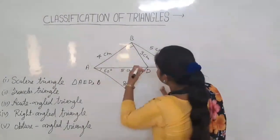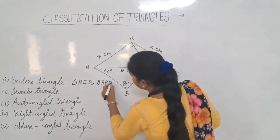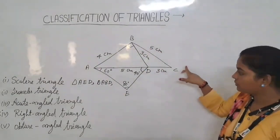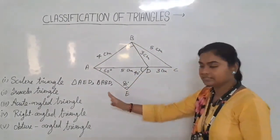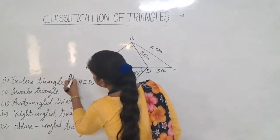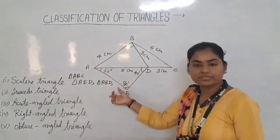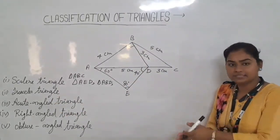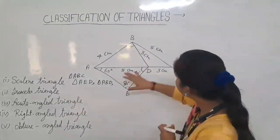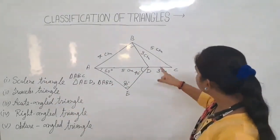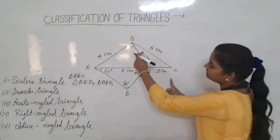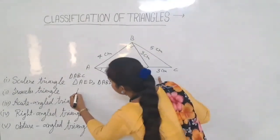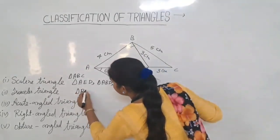Triangle A, B, D has sides 4 cm, 8 cm, and 5 cm — all different — so triangle ABD is a scalene triangle. Triangle ABC also has all different sides, so it is also a scalene triangle. Second, we have isosceles triangle — two sides are equal and two angles are equal. Triangle BDC has sides 3 cm, 3 cm, and 5 cm, so it is an isosceles triangle.